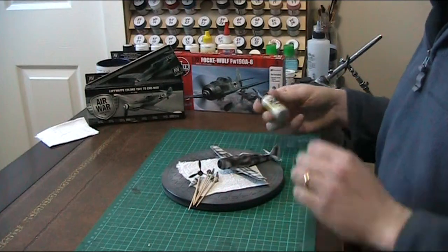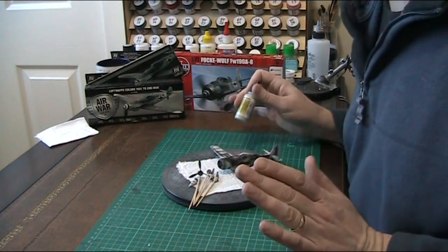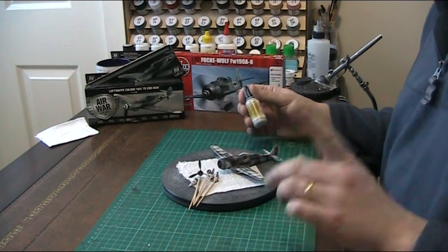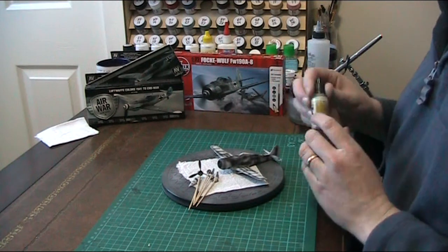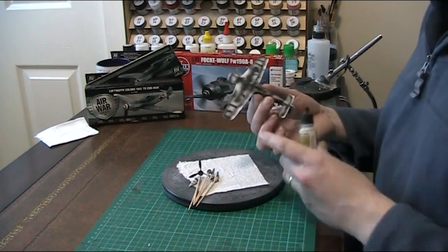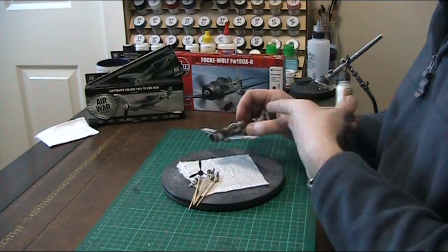The first thing to go on is going to be the RLM 76. I have also just noticed, I keep saying RML, not RLM, so apologies on that. I hope too many people haven't noticed that, but the RLM 76, which is the base coat here that goes on the bottom of the fuselage and the wings and on the side of it.